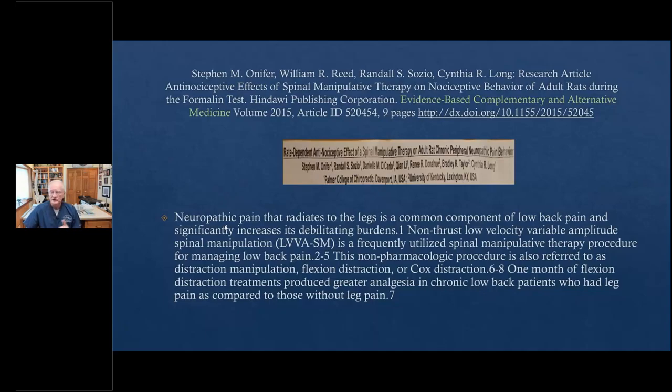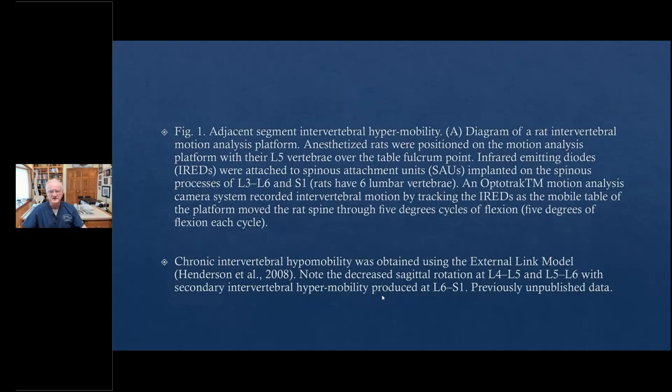I'd like you to note that neuropathic pain was addressed, pain that radiates to the legs, a common component of low back and chemical inflammatory changes of the dorsal root ganglion. This was Cox distraction that they were using, that the neuropathic pain, a very common finding that you and I see as clinicians. One month of flexion produced greater analgesia in chronic low back patients who had leg pain as compared to no treatment.